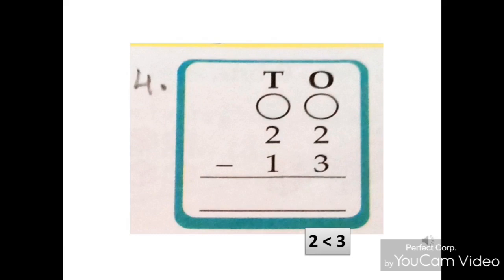Now we borrow ten's from ten's place. The digit in the ten's place is reduced by 1 and becomes 1. And the digit in the 1's place increases by 10 and becomes 12.